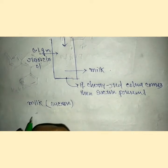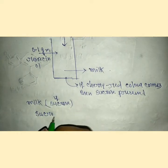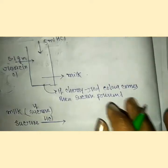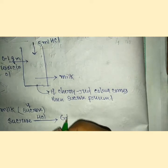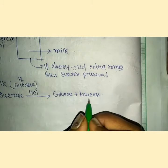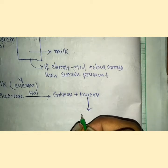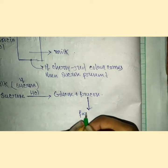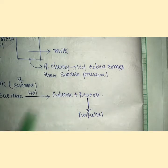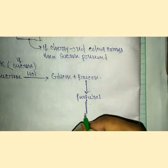If sucrose is present, then when we add HCl, it breaks down into glucose and fructose. HCl rapidly breaks down the fructose into furfural. Once we add HCl, this reaction takes place.